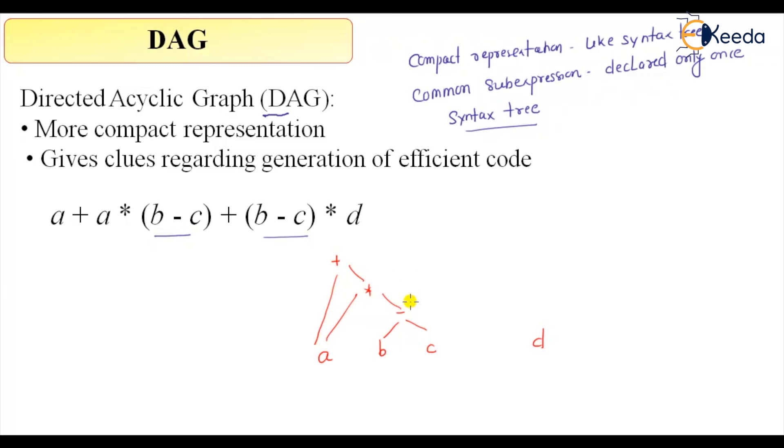B minus C is already there, and then there is a multiplication between this and D. Finally we have done, and now we will add this part because it's left associative.